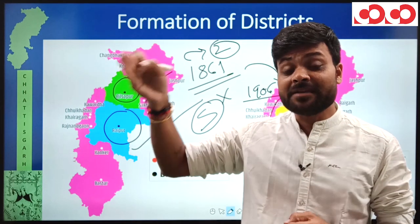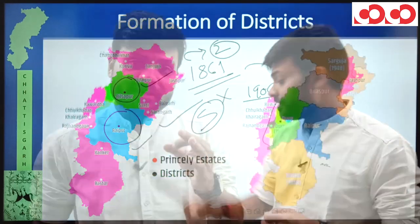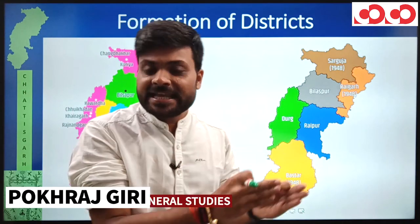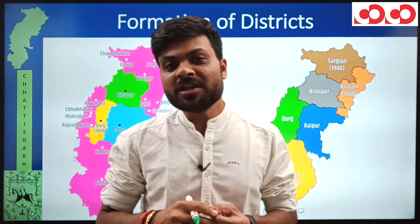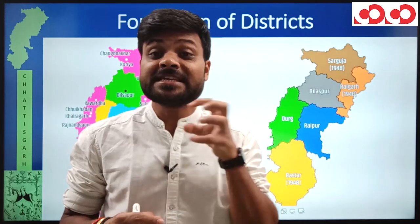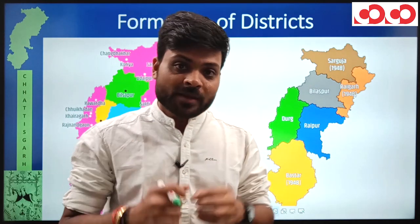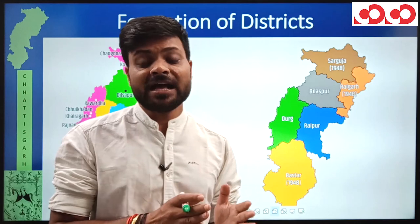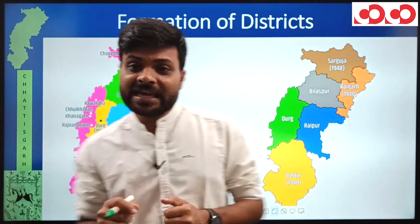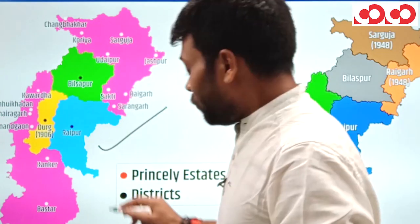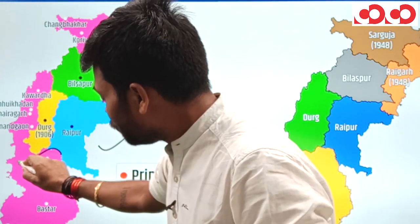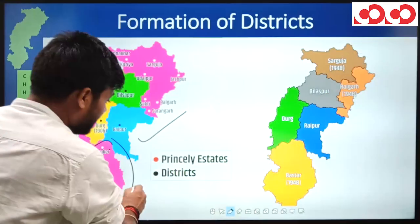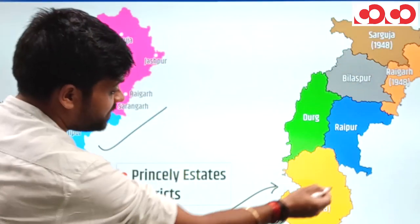After independence in 1947, the princely estates acceded to the Indian Union. Following this, in 1948, new districts were formed in Chhattisgarh. Looking at the 1906 map, the two princely estates in the south — Kanker estate and Bastar estate — were merged to form Bastar district.